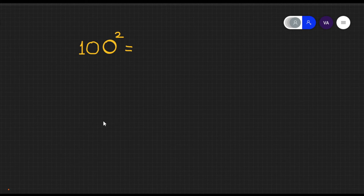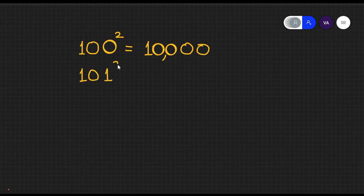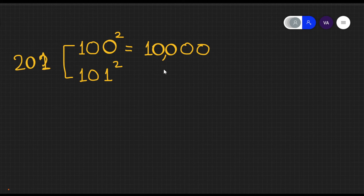Let's start writing square numbers from 100, because 100 squared is easy: 100 times 100 gives 10,000 — that's a 1 followed by 4 zeros. For 101 squared, the sum of consecutive numbers 100 plus 101 is 201. So we add 201 to 10,000 to get 10,201.